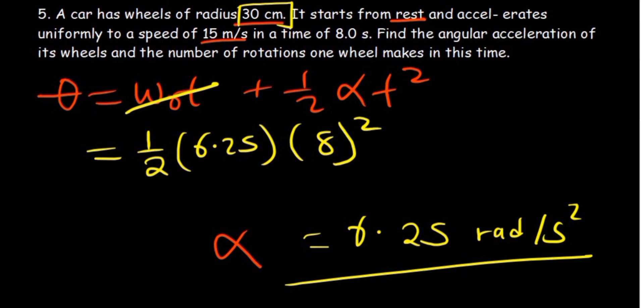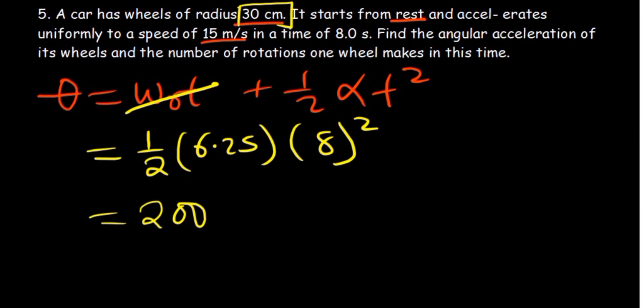So you want to have 0.5 multiply by 6.25, multiply again by 64, which is 8 squared. So at that point, you have 200. So you have 200 radians.